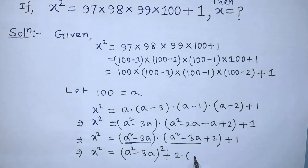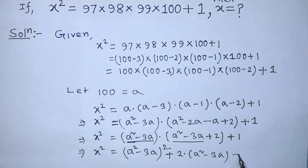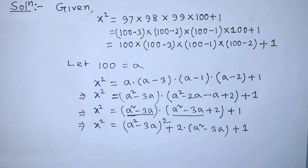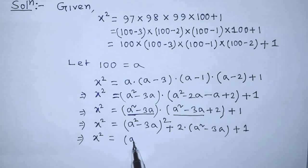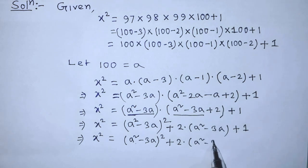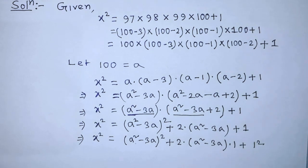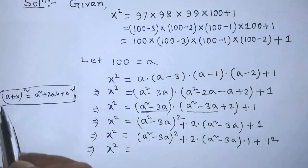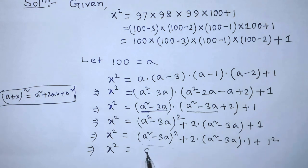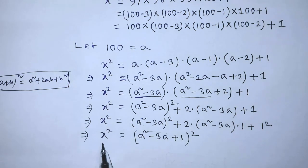So x² equals (a² minus 3a) whole squared, plus 2 times (a² minus 3a) times 1, plus 1 squared. We can now write this as (a² minus 3a + 1) whole to the power 2.